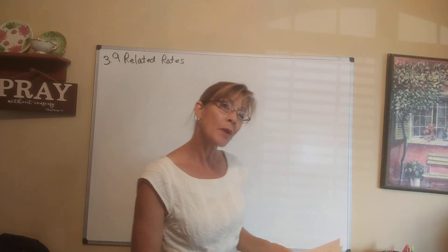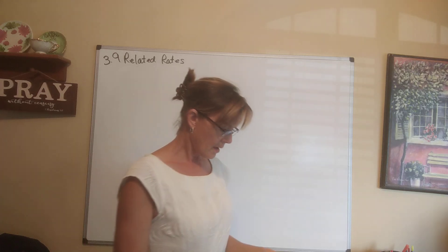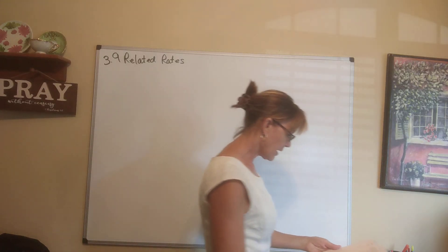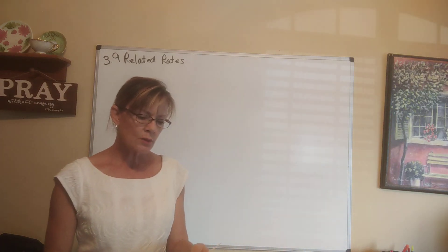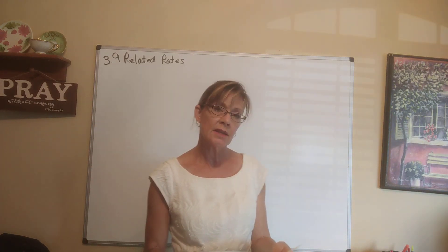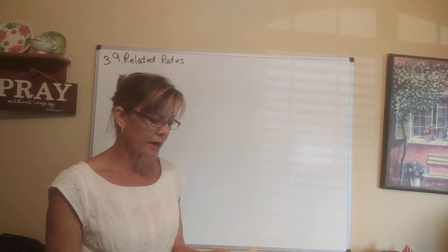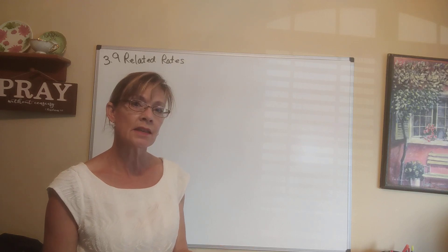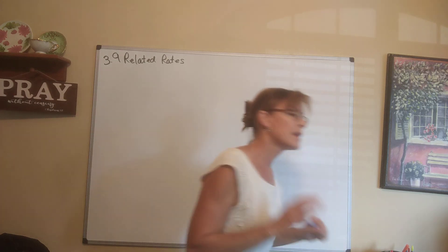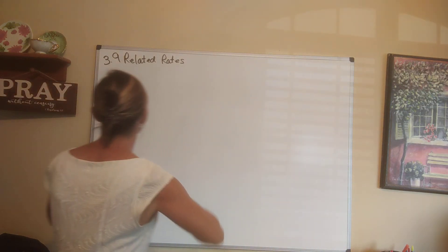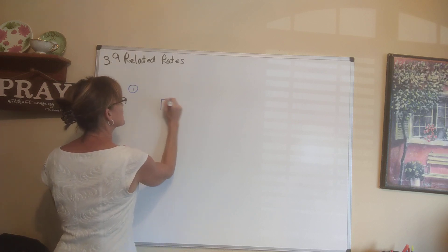We have eight problems, and it will probably take two videos to get through this so it doesn't become too long. Let's just begin. The first one says: each side of the square is increasing at a rate of six centimeters per second. At what rate is the area of the square increasing when the area of the square is 16 square centimeters? We have a square that is increasing in size.